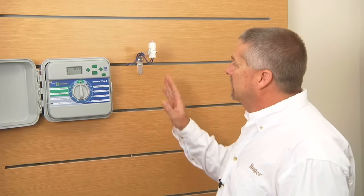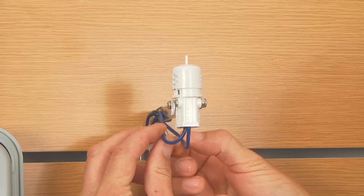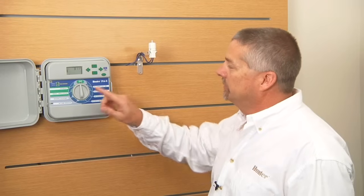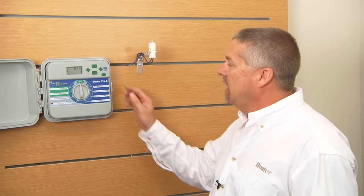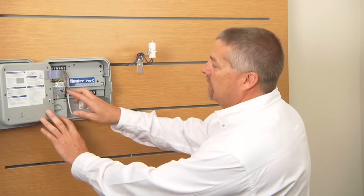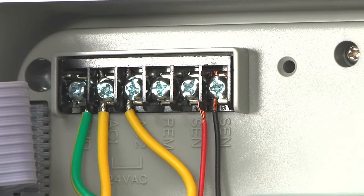The basic parts here is the rain sensor. It's two wires that run out to it from the controller. You've got a rain sensor bypass and active switch. And inside the controller is where the two wires hook up to the two sensor terminals.